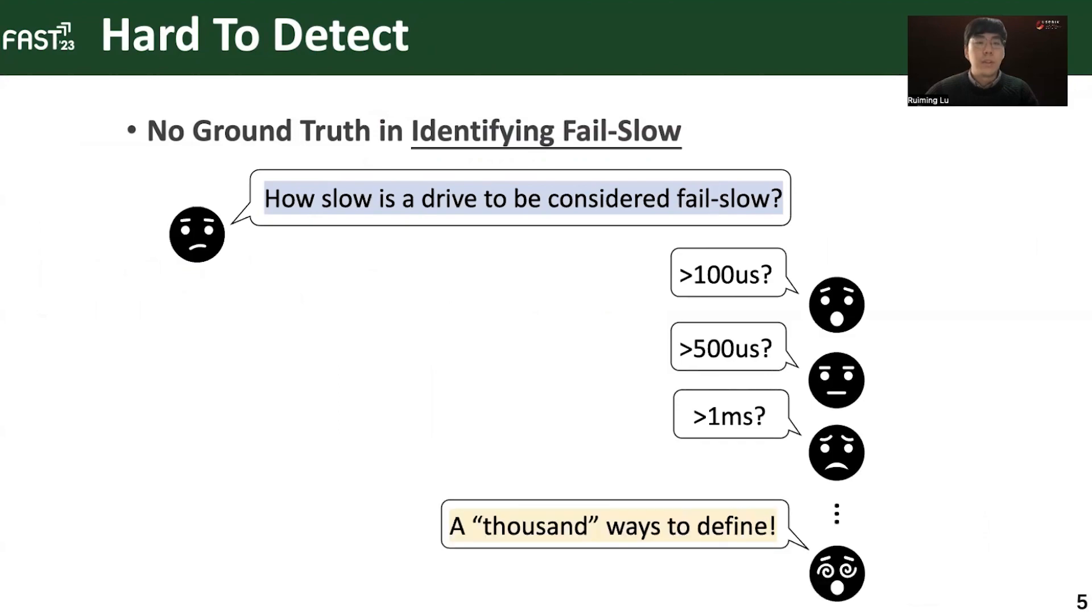More importantly, it is not always the fail-slow failures that cause performance degradation. A temporary heavy workload or one-shot high GC time could also introduce abnormally high latency.